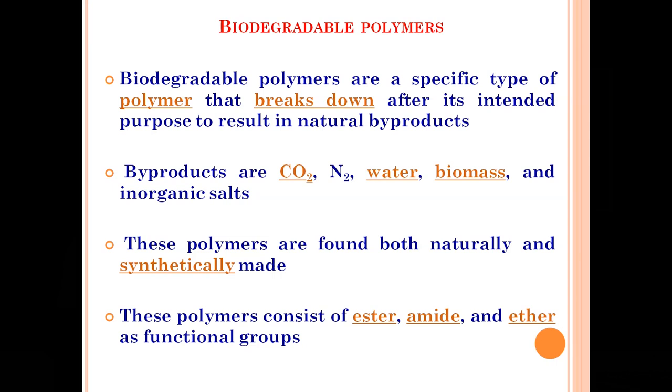So after the degradation of biodegradable polymers, the byproducts obtained are carbon dioxide, nitrogen, water, biomass and some inorganic salts. These are all byproducts obtained from biodegradable polymers. These polymers are found both naturally and synthetically made.